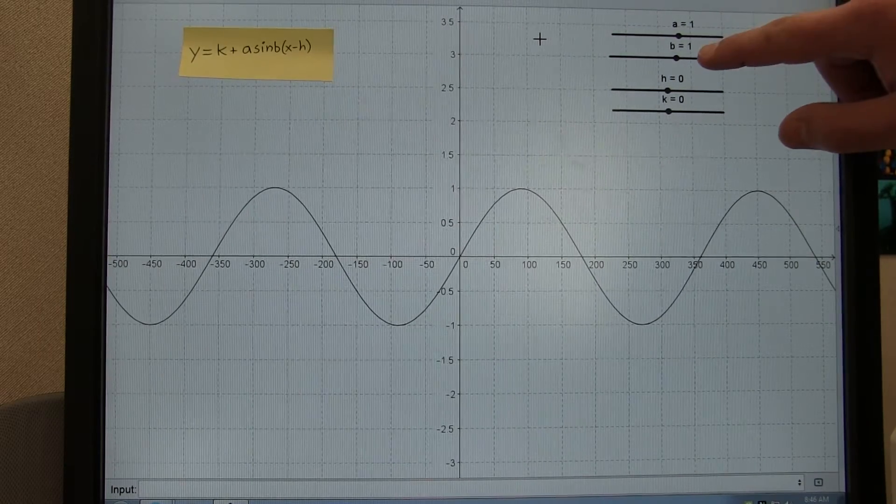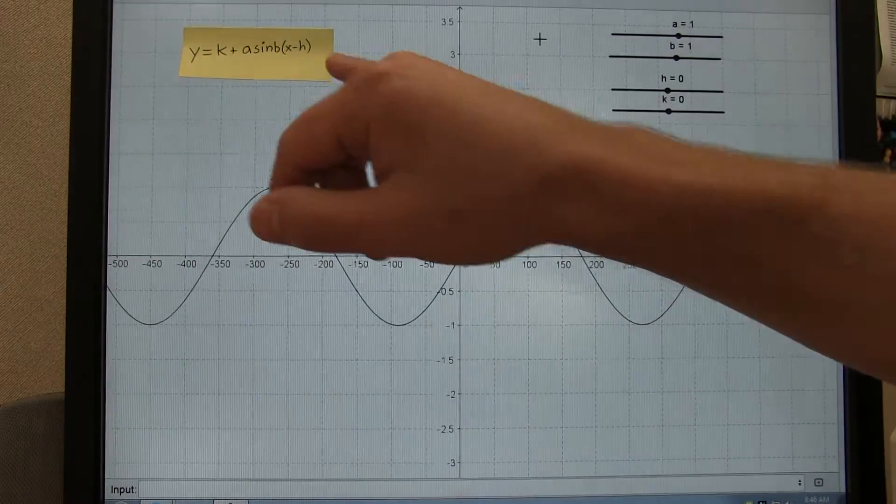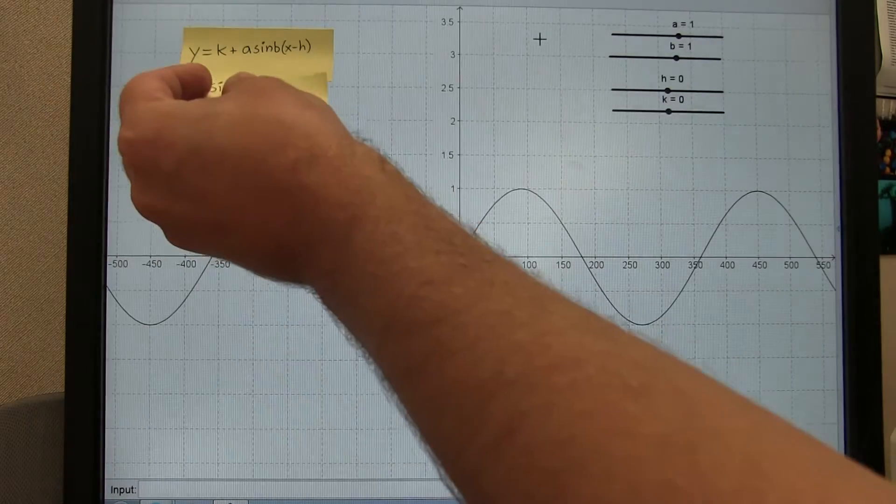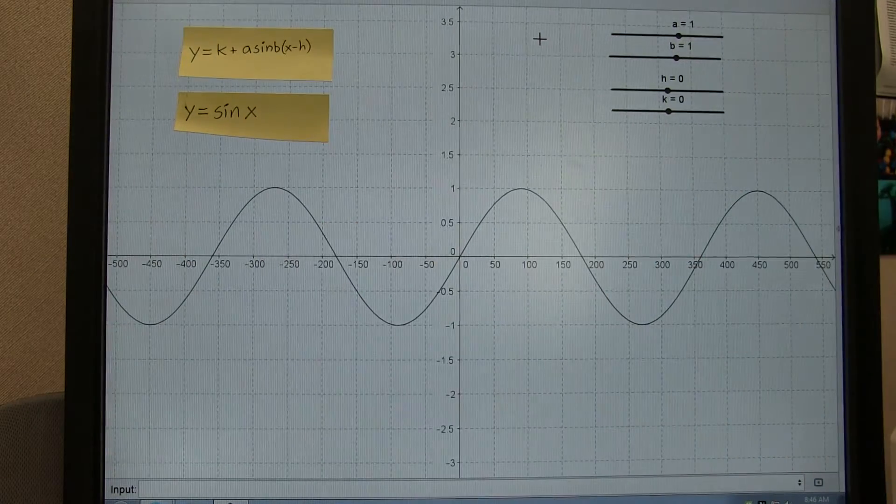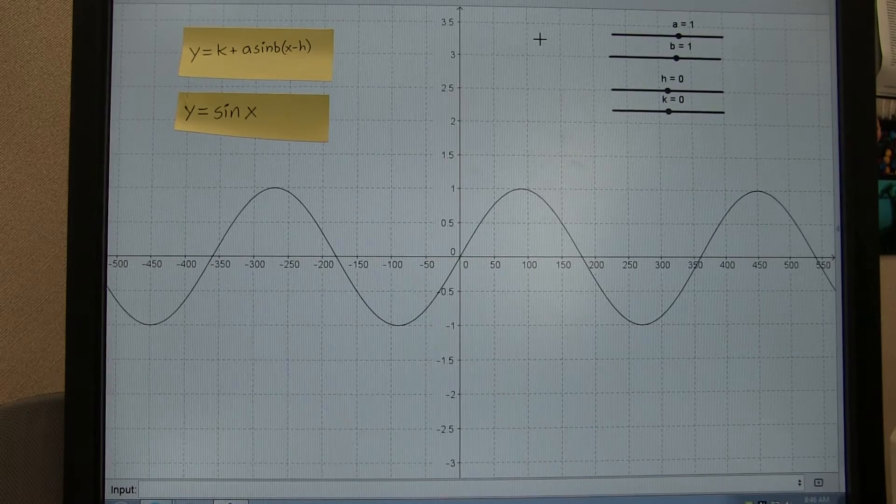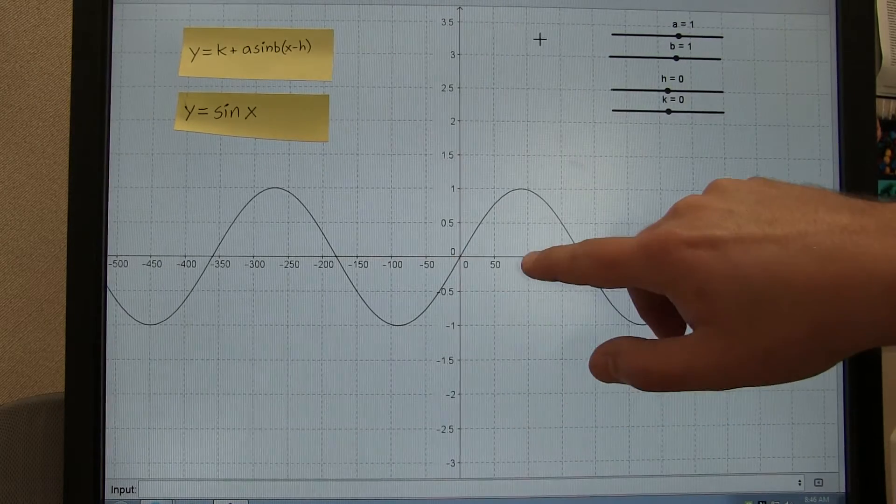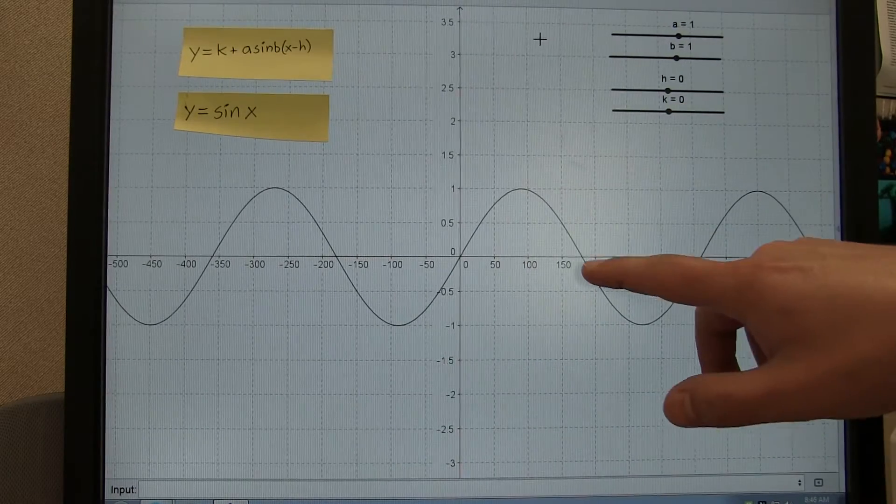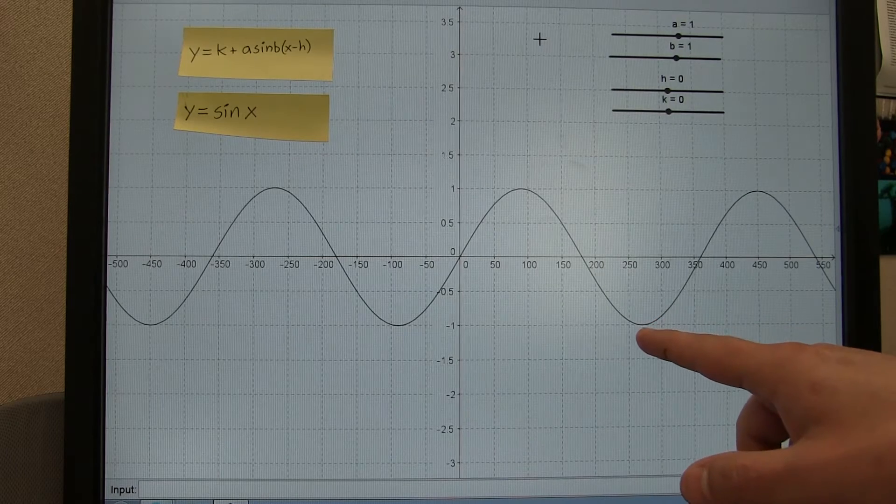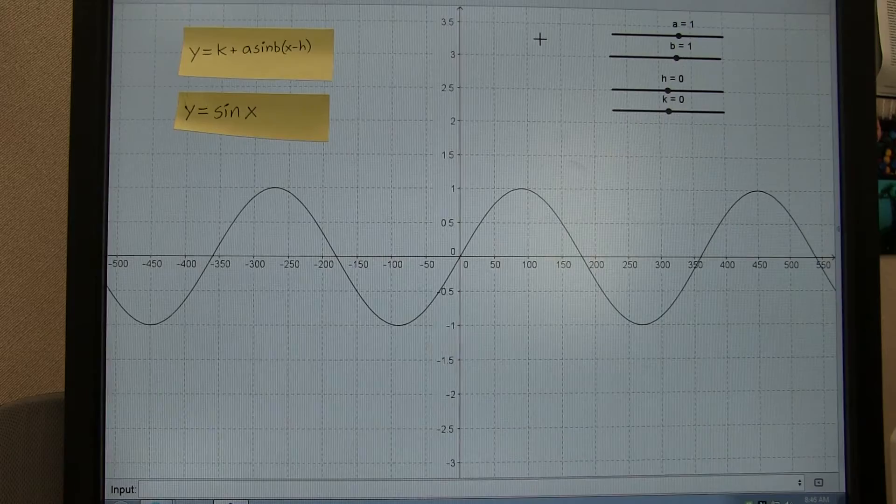Right now, a and b are set to one, and h and k are set to zeros. So we're graphing this right now. This is just our standard, we call it the mother function for sine. We can see that at zero degrees, sine is zero. At 90 degrees, sine is one, it's maximized. At 180 degrees, it returns to zero. It bottoms out at 270 degrees, and it completes the cycle at 360 degrees.